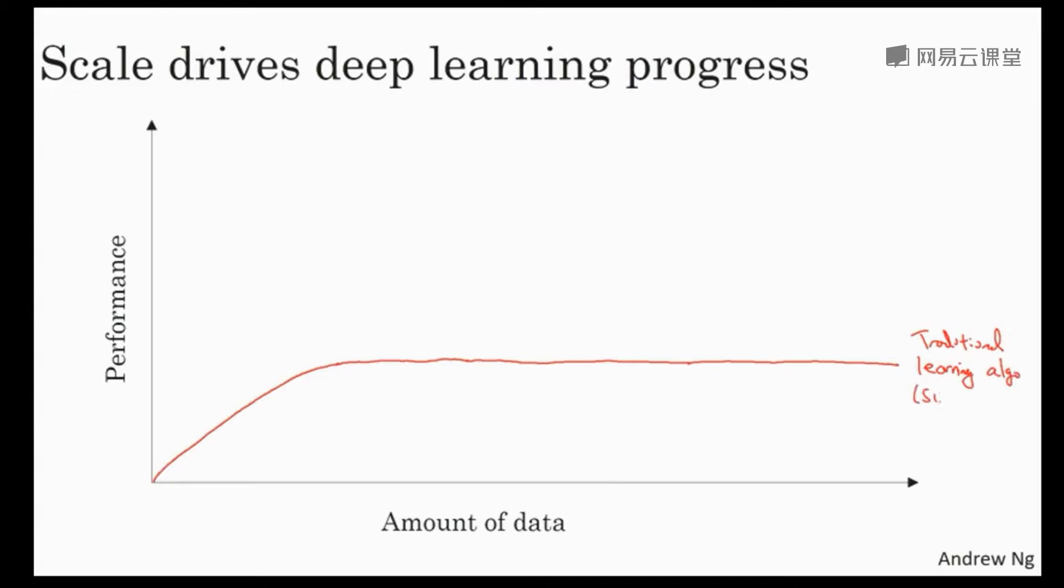It turns out if you plot the performance of a traditional learning algorithm, like support vector machine or logistic regression, as a function of the amount of data you have, you might get a curve that looks like this, where the performance improves for a while as you add more data. But after a while, the performance pretty much plateaus. It was as if they didn't know what to do with huge amounts of data.